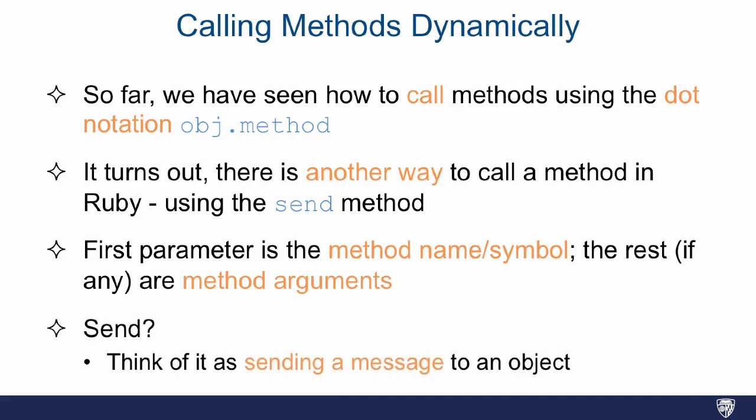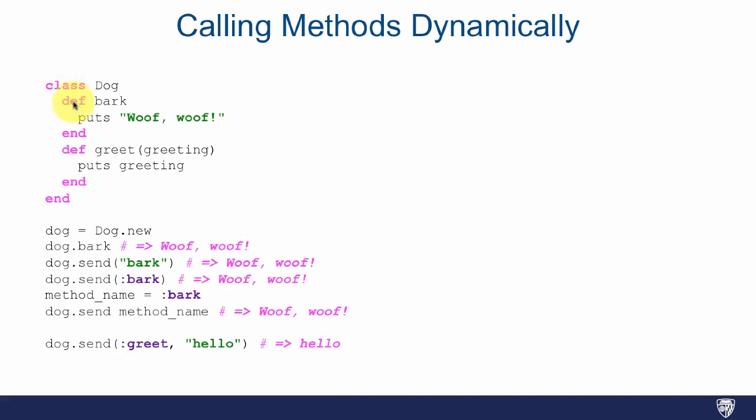So let's see an example. We have a class called Dog who barks and he could maybe greet somebody with a greeting. All the bark method does is just prints out a message, and the greet method takes a greeting parameter and just prints it out. So when we instantiate the Dog class, we could just call the bark method on the dog, but we could also say dog.send('bark'). So hey dog, why don't you get sent this message of bark, which basically does the same thing as using the dot notation of dog.bark.